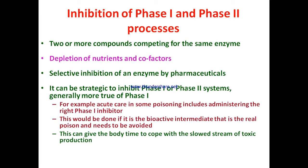In certain acute poisoning cases, the metabolic intermediate may be more toxic and must be removed immediately upon release. For this, the phase two biotransformation process needs to be faster than phase one. By inhibiting phase one using plant inhibitors, the bioactive intermediate that is the real poison is produced at a slow rate, giving the body enough time to remove it through normal or increased phase two biotransformation speed.